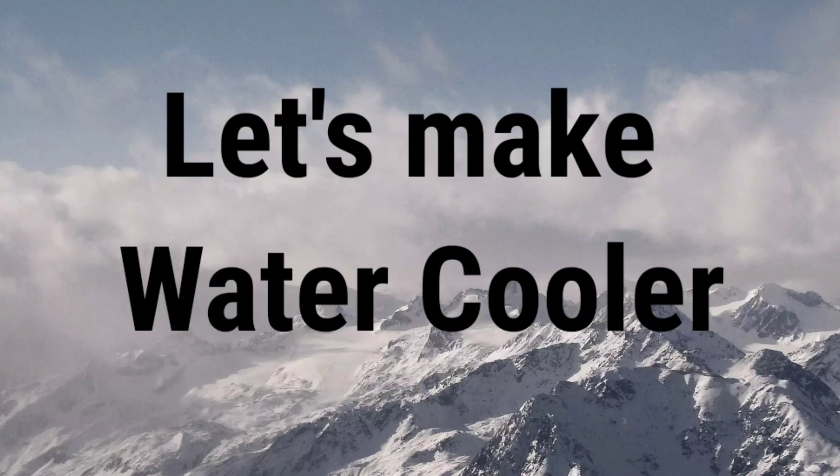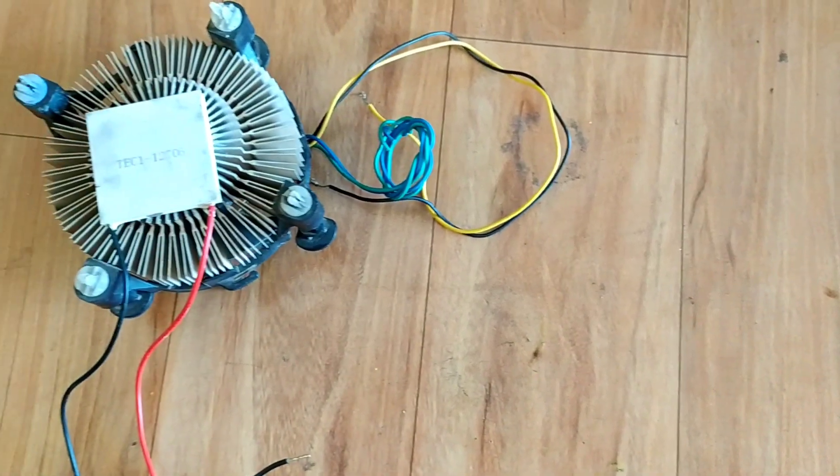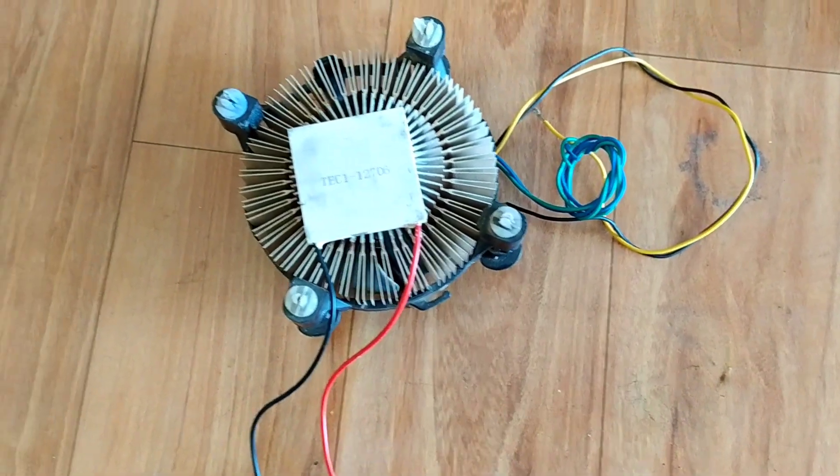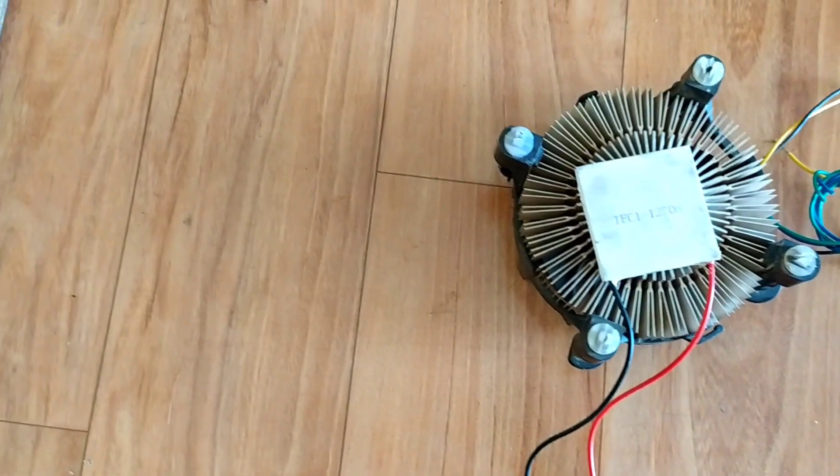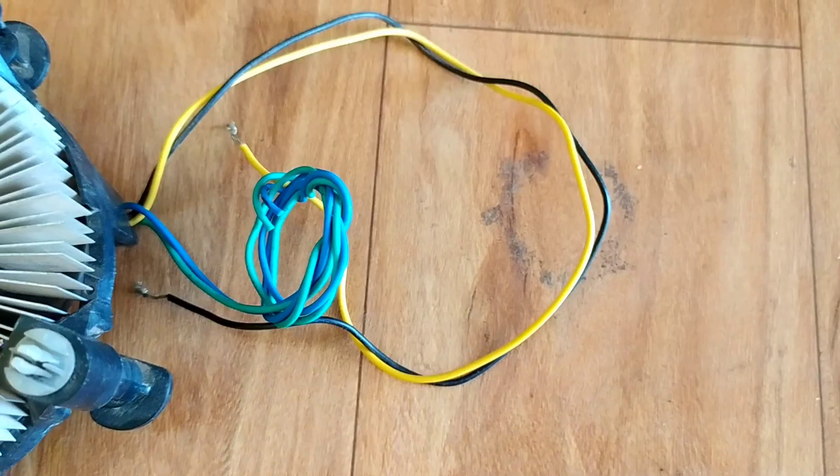Hi, currently summer is going on so let's make a water cooler. We will use a Peltier module. When we apply 12 volts to it, one side of the module is very hot and another side is very cold.